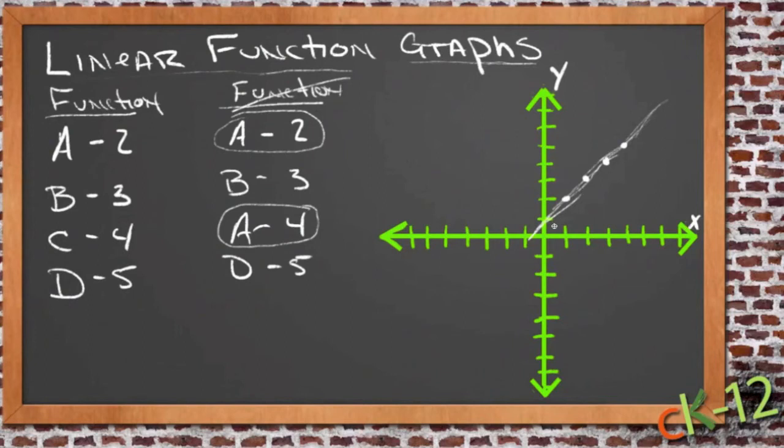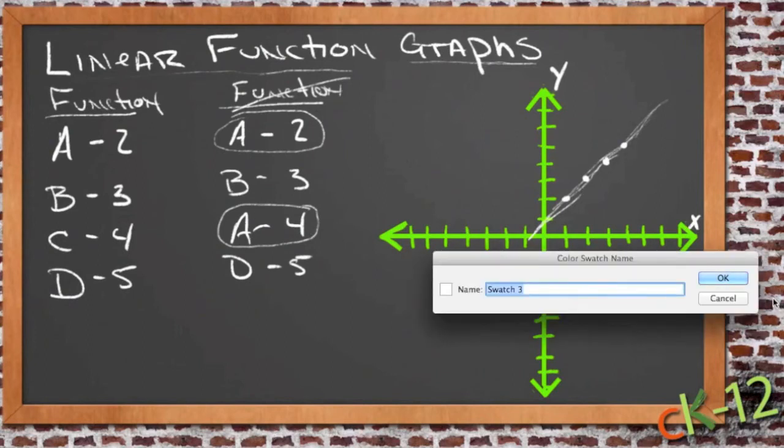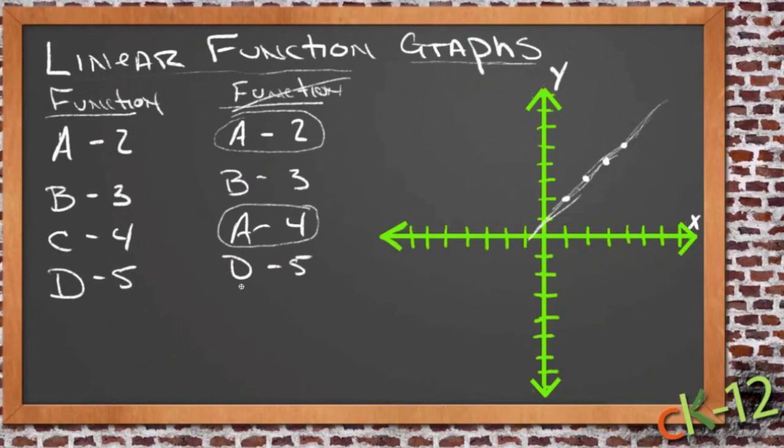Then if we take the other points and compare them, we'll do this in orange. Take these values and graph them. Well A is 2 again, so we got a point here, and B is 3, but then A is also 4, we have another point up here, and then D is 5. So this one gets duplicated right here.